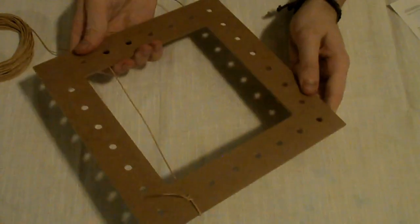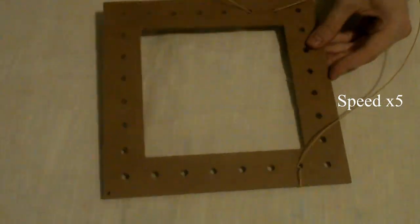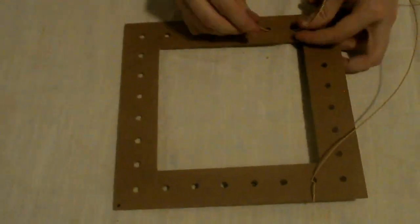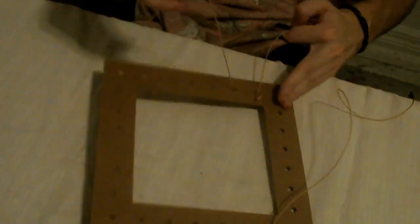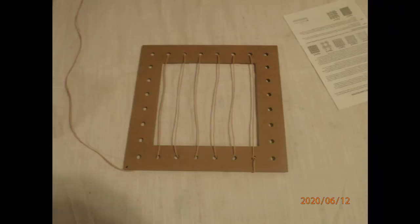This is what it should look like when you're done. Next, weave the vertical supports. Take the free end of the cord and lace it down through the corresponding hole on the other side of the frame. Continue until you have 6 vertical cords.